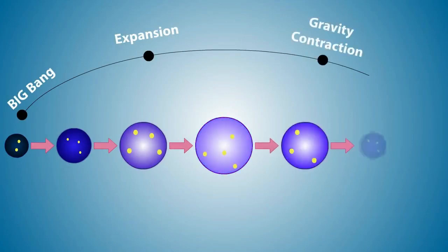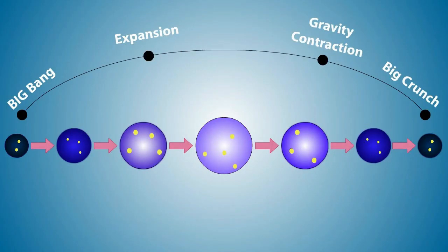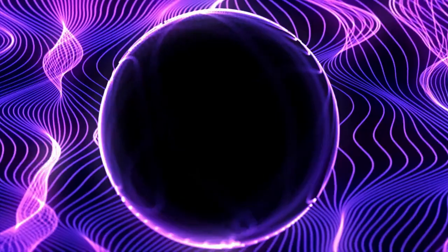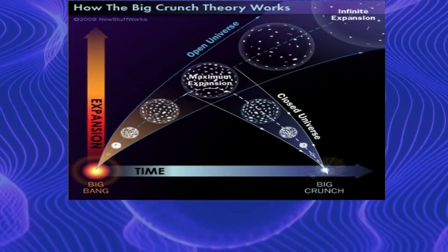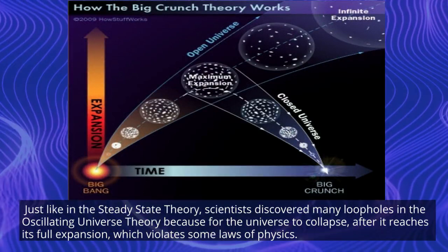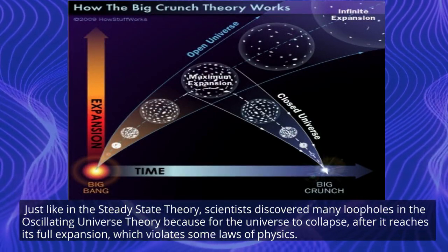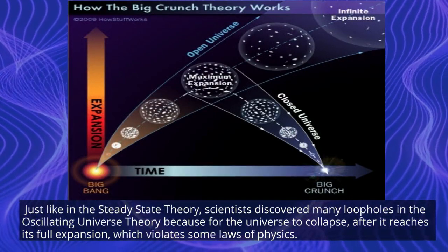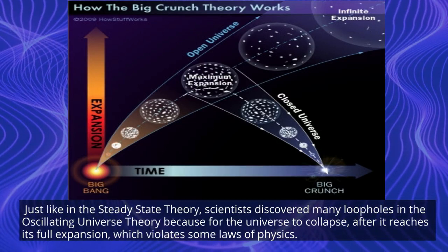It is a combination of the Big Bang and Big Crunch theory. That is we live in between the Big Bang and the Big Crunch. The theory suggests that our universe now may be a part of a cycle of universes. The Big Crunch occurs when the universe expands and eventually reverses, then collapses causing a singularity or the formation of another Big Bang. Just like in the steady state theory, scientists discovered many loopholes in the oscillating universe theory because for the universe to collapse after it reaches its full expansion, which violates some laws of physics.